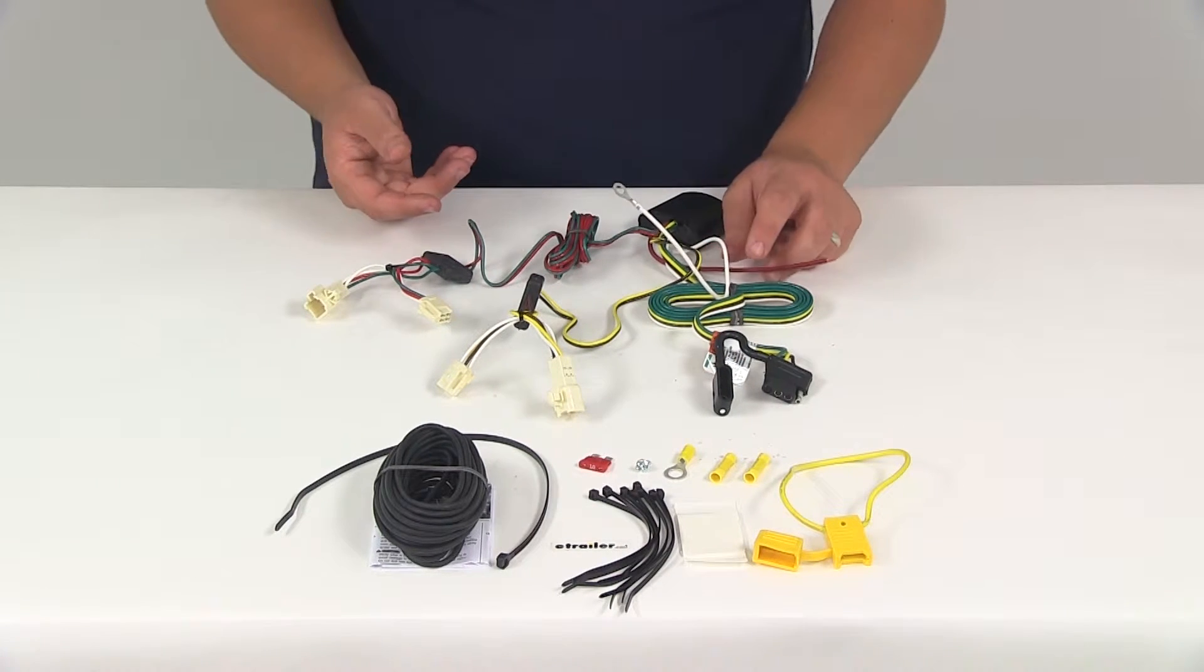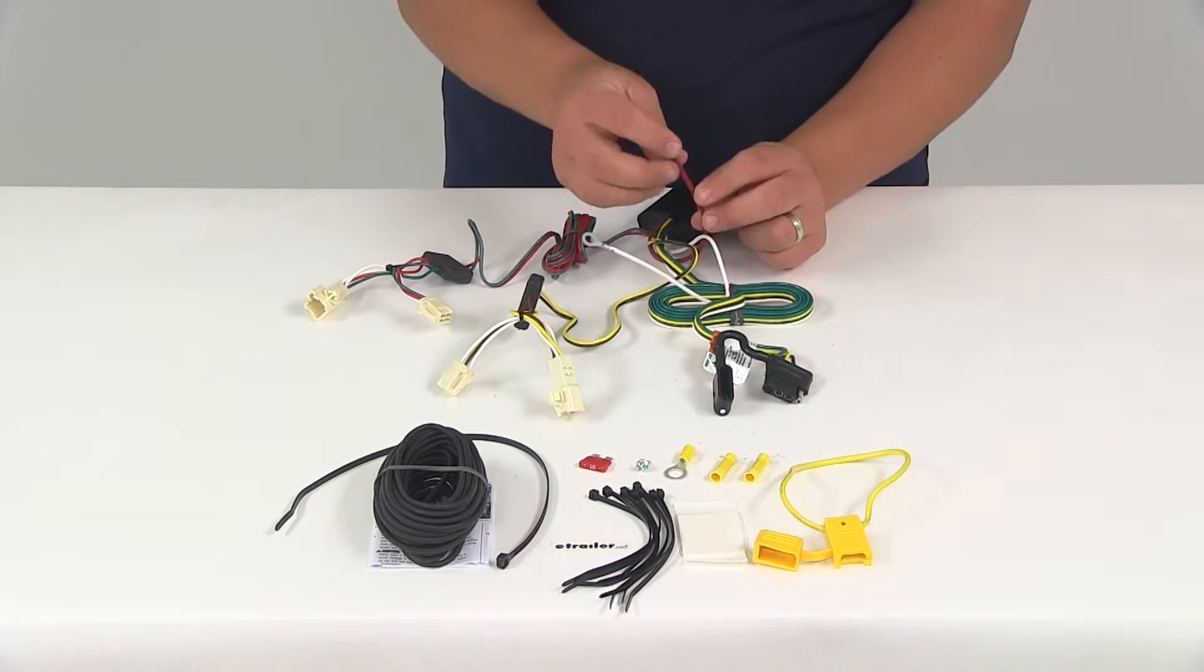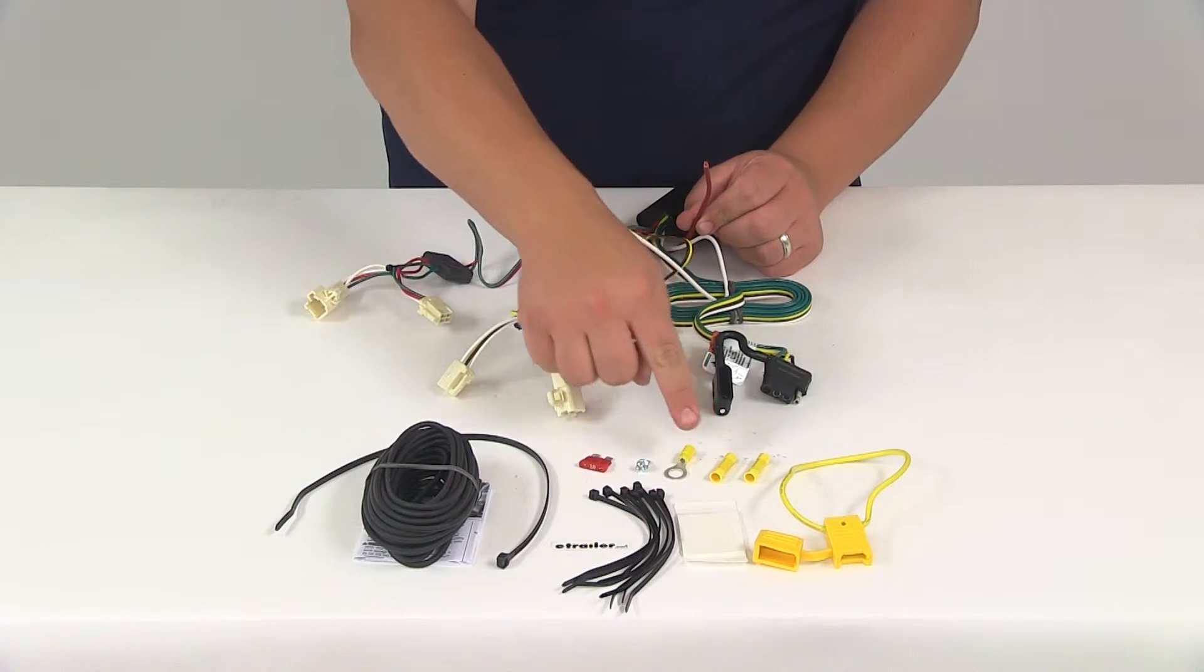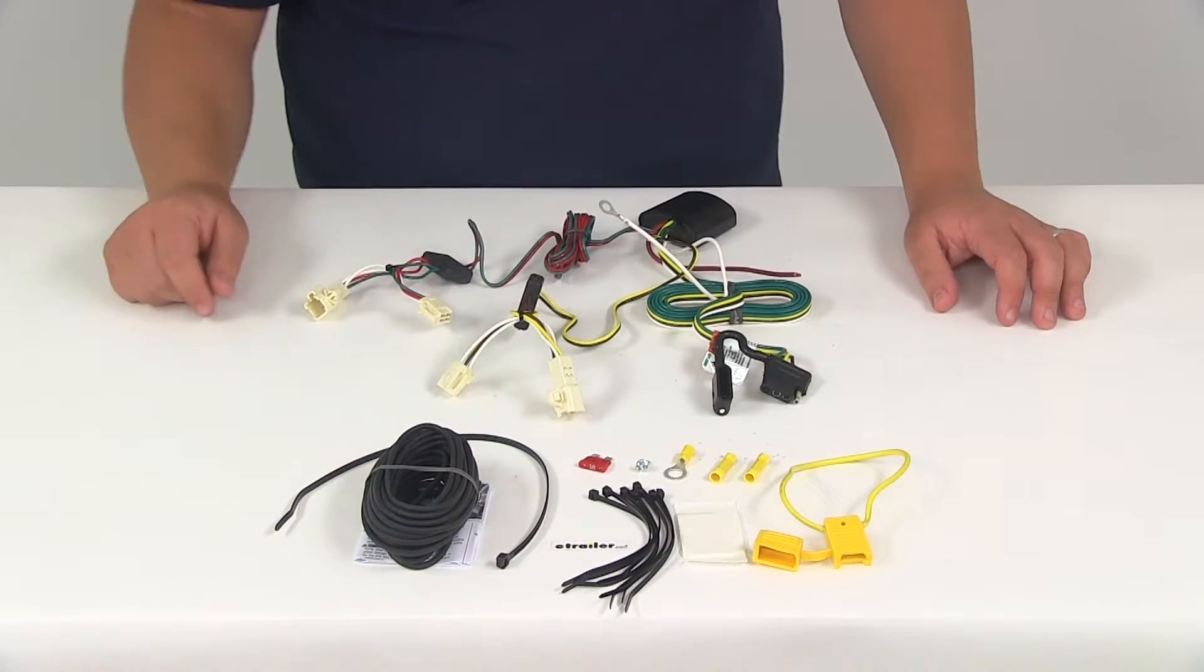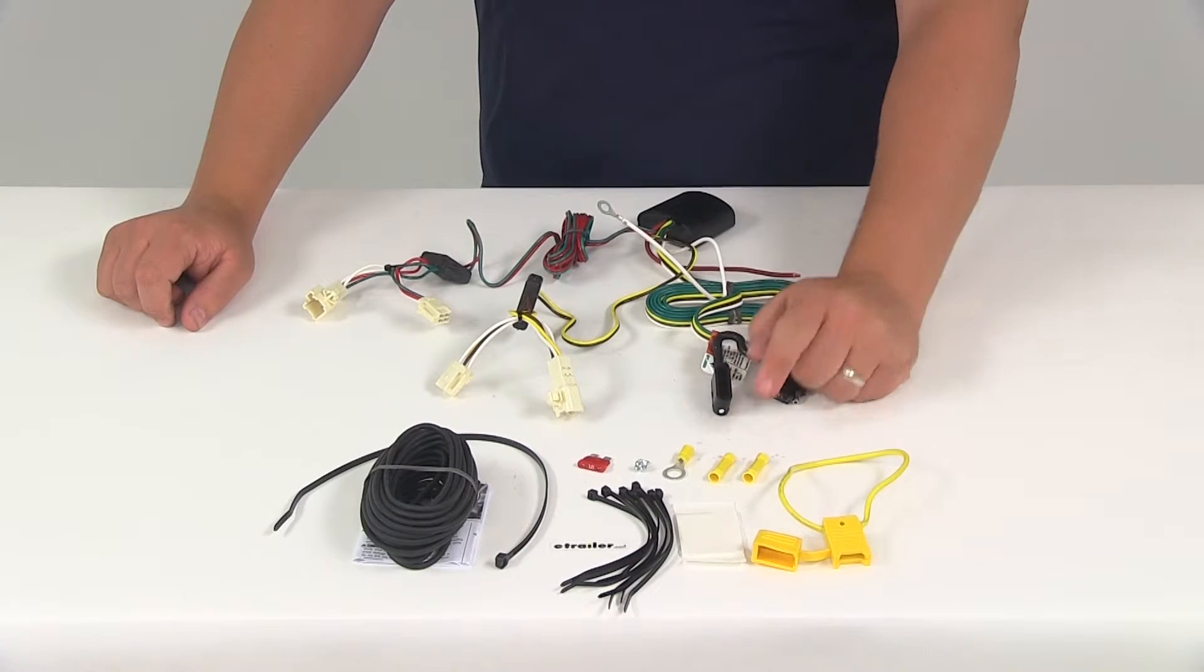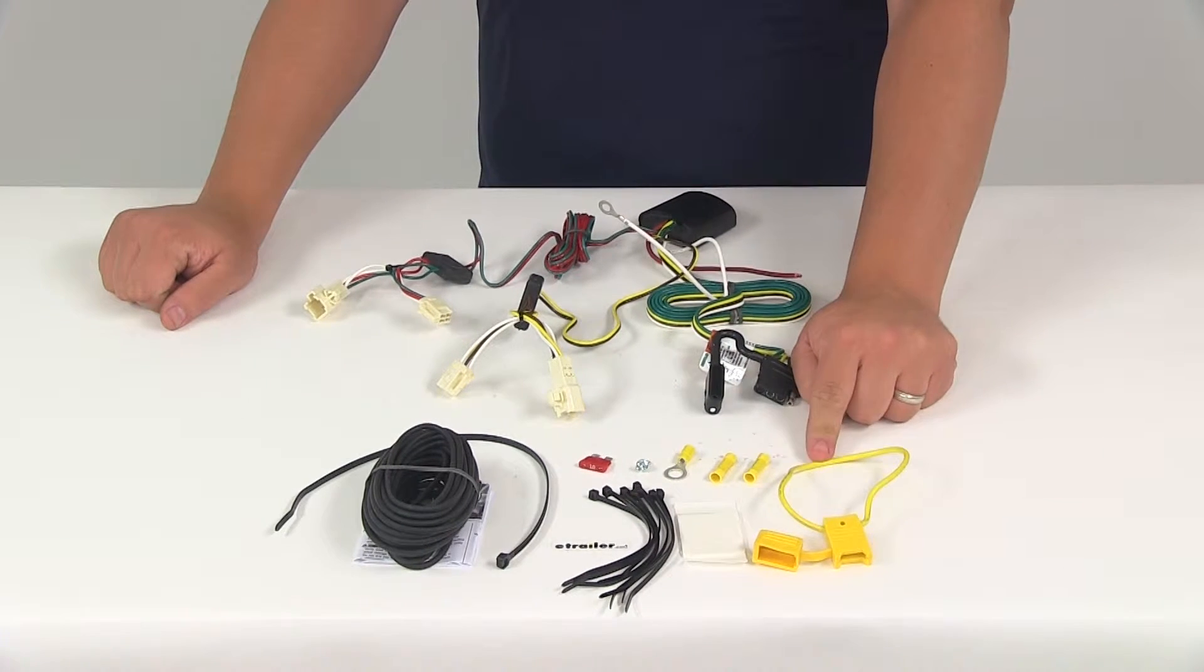Then you're going to need to run the hot lead to the vehicle battery. The hot lead is the red wire right here. That's going to connect to the bundled black wire with one of the included butt connectors. The other end of the black wire is going to run all the way up to the vehicle battery, and it's going to get a butt connector attached to it and connect to half of the fuse holder.